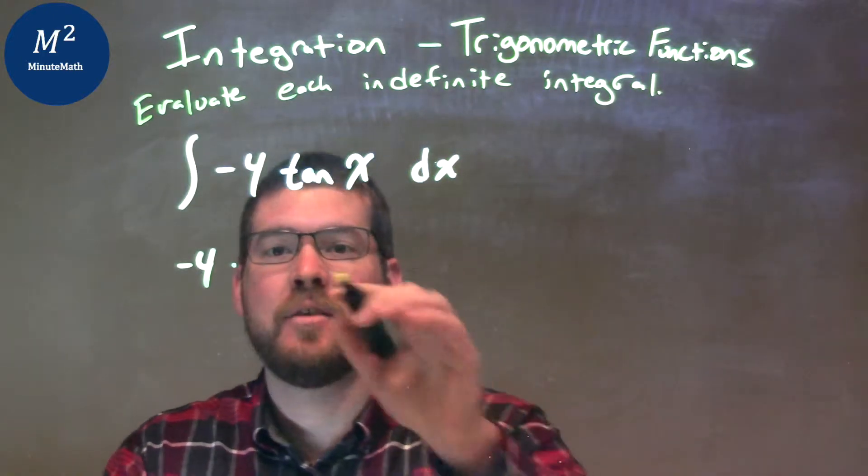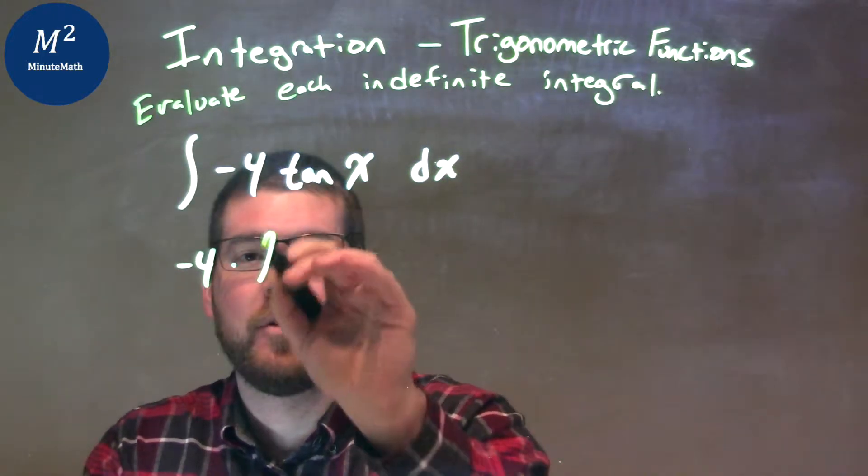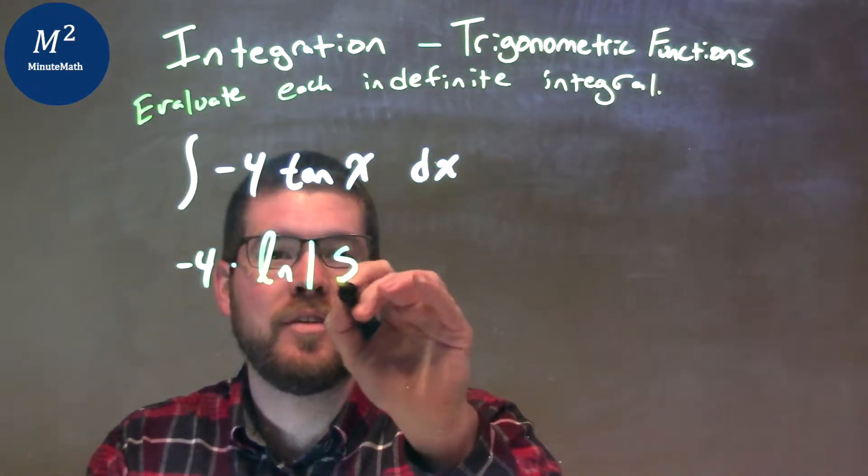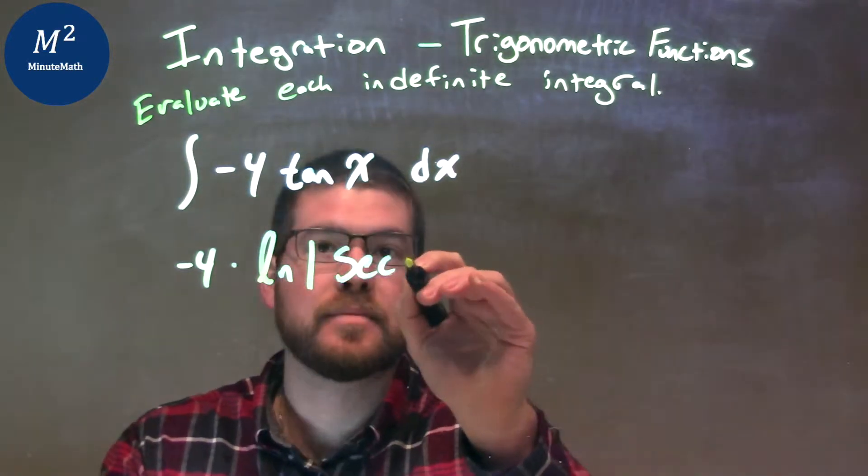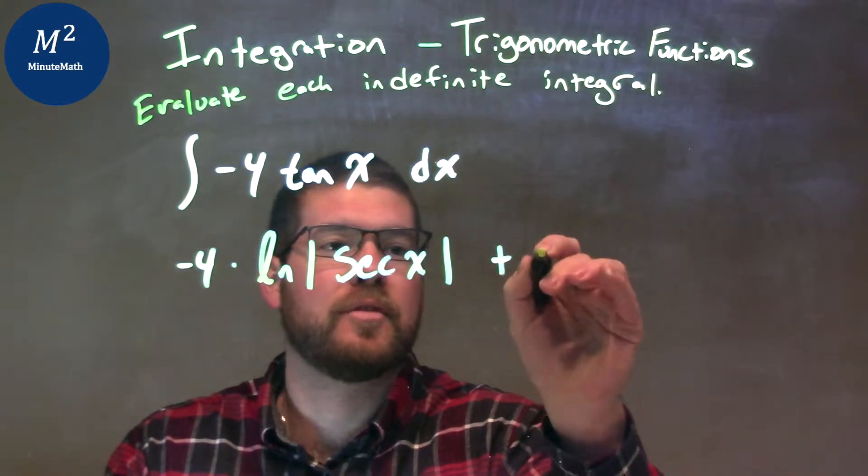Well, the integral of tangent of x is the natural log, natural log of the secant of x, right there, and now we add plus c.